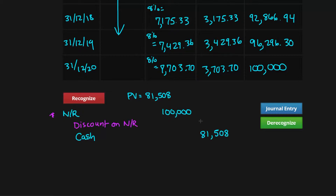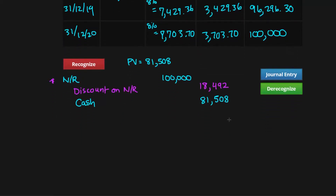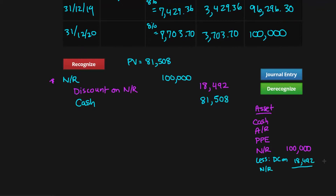Using the contra account, we'll have an accurate net realizable value for our assets. The discount is the difference between one hundred thousand and eighty-one thousand five hundred and eight, which is eighteen thousand four hundred and ninety-two. On your balance sheet in the asset section — alongside cash, accounts receivable, and property plant and equipment — the note receivable will be reported at a hundred thousand, but with a contra asset account balance of discount on note receivable of eighteen thousand four hundred and ninety-two, giving an accurate net realizable value of eighty-one thousand five hundred and eight.